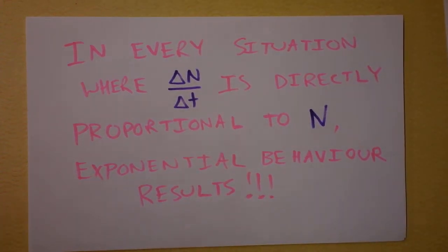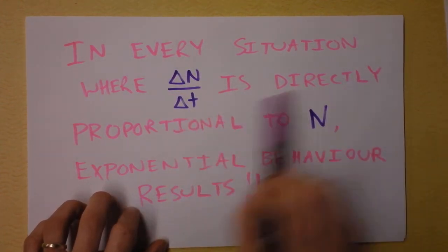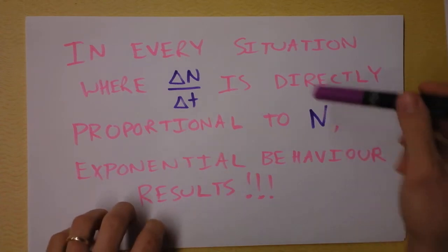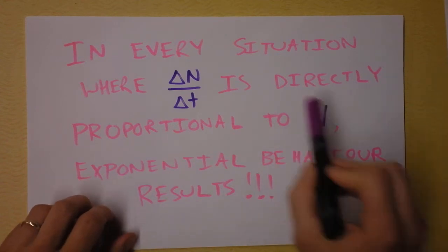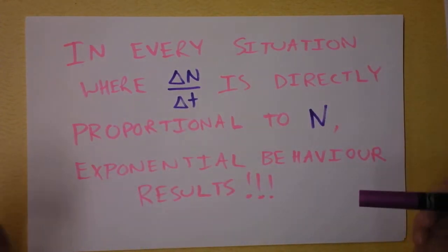It's a beautifully simple fact of mathematics that in every situation where the rate of change of a system is directly proportional to the amount of that particular variable, exponential behavior results. This is incredibly important to understand. Whenever what you get is proportional to what you have, you've got exponential behavior.